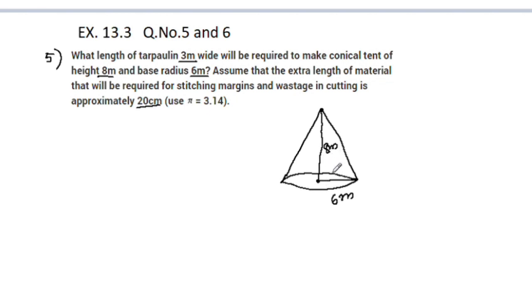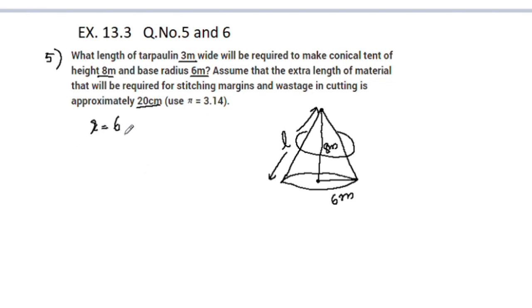The curved surface area formula is pi×r×L. We use the slant height L, where L is equal to the square root of H squared plus R squared.